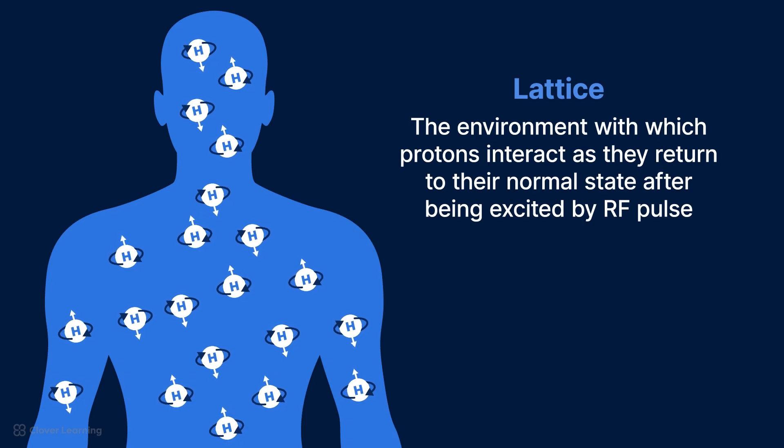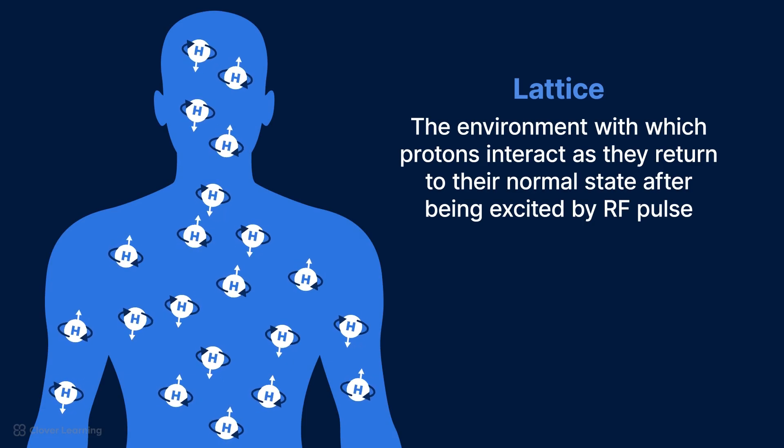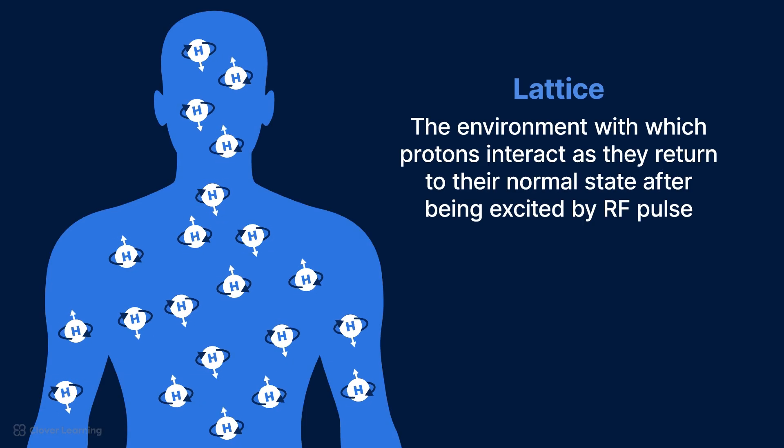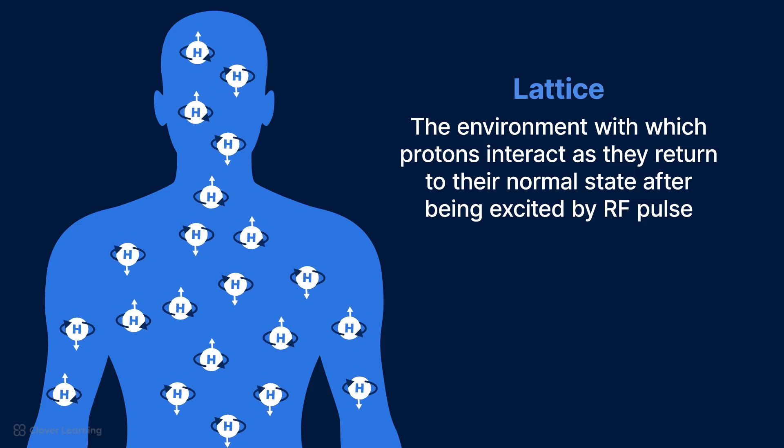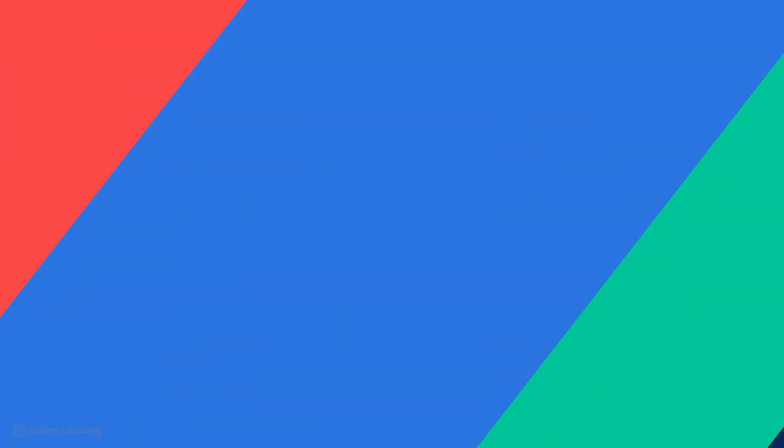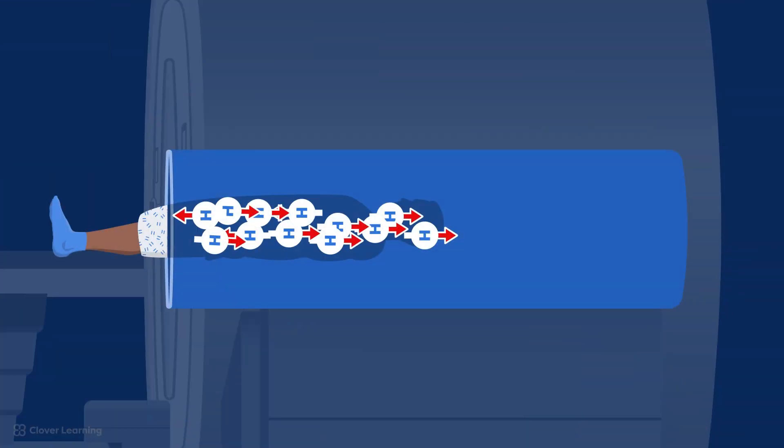Lattice refers to the environment around the protons in your body's atoms with which these protons interact as they return to their normal state after being excited by the MRI's radiofrequency pulse. Think of it this way. A patient lying down in an MRI scanner has their body positioned along the longitudinal plane, and the static external magnetic field of the scanner, called B sub-zero, has aligned the magnetic moments of hydrogen protons along this plane.